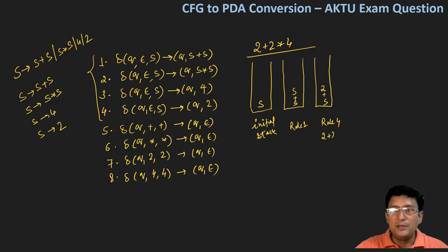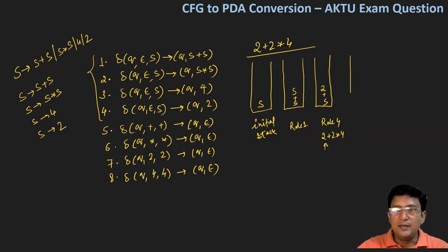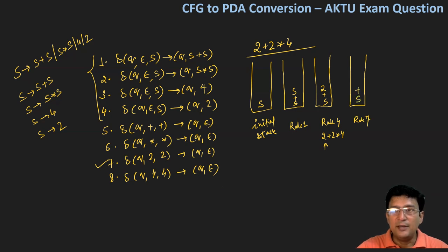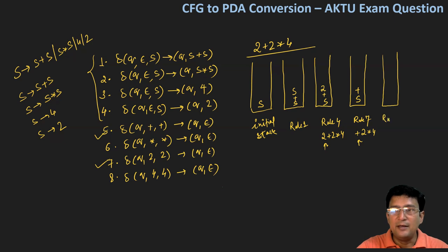Input है 2 plus 2 multiplied with 4, current pointer 2 पे है. Stack का top भी 2 है और input symbol भी 2 है, so rule number 7 applied — pop करते हैं. Stack बचता है: plus S. Input बचता है: plus 2 multiplied with 4. Current symbol plus है और stack का top भी plus है, तो rule number 5 apply करेंगे — stack को pop कर देते हैं. Remaining input: 2 multiplied with 4.